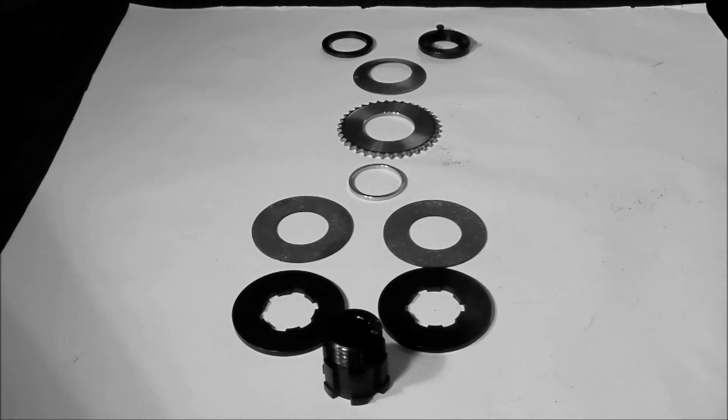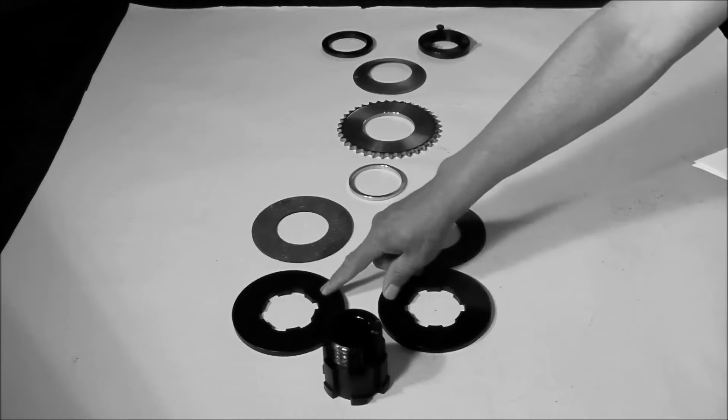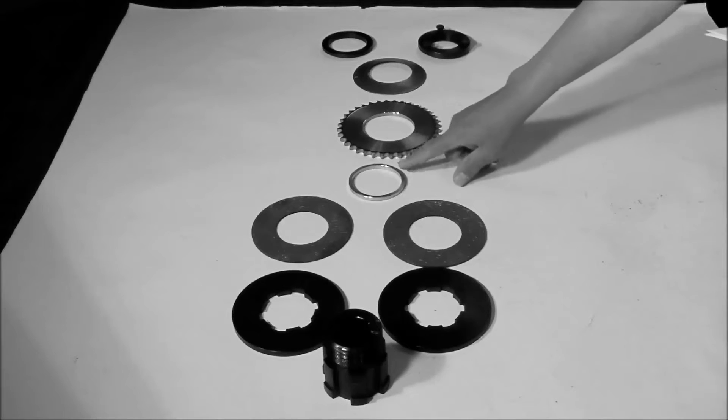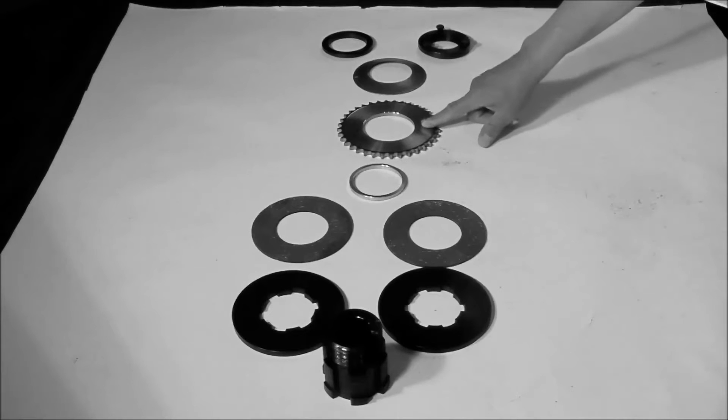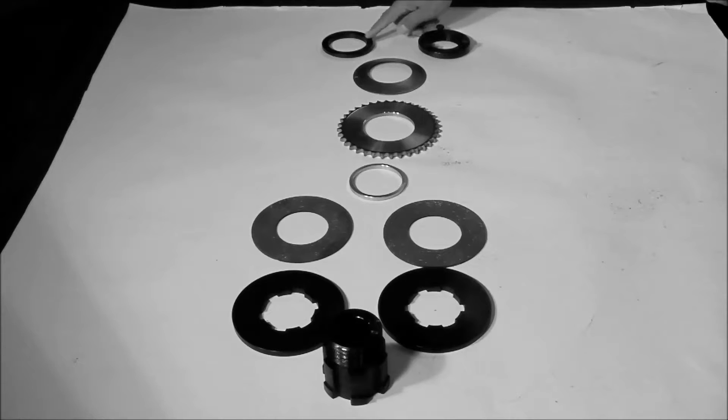The components of the torque limiter are as follows: the hub, the pressure plates, the friction discs, the bushing, the sprocket, the spring, the spring retainer, the adjusting nut, and the adjusting nut screws.